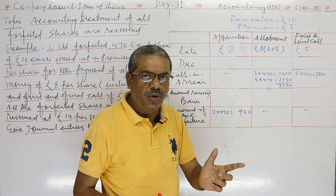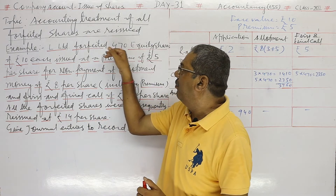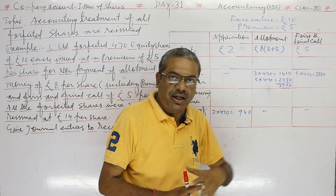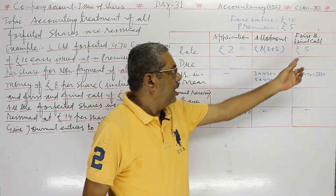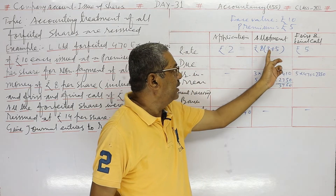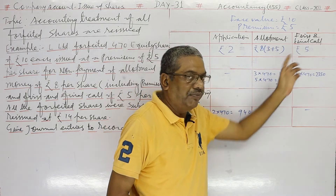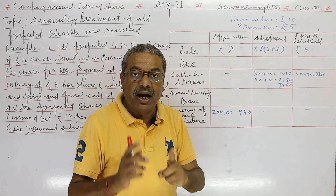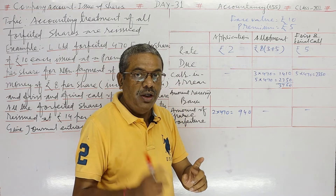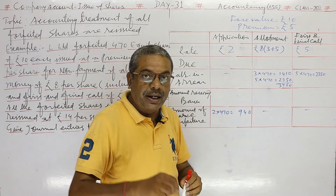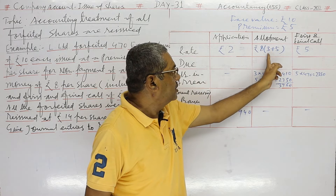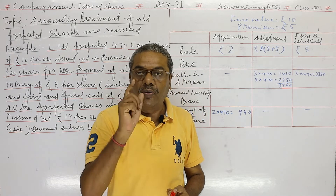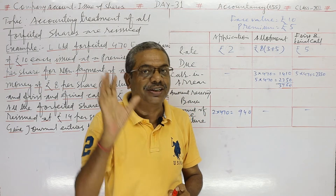A shareholder who is unable to pay on 470 equity shares in allotment and first and final call — that means allotment rate not paid is 3 and first and final call not paid is 5. But he paid the application money of rupees 2. So paid up is 2 plus 3 plus 5, which equals 10 — the full face value of rupees 10 per share. Is it clear?